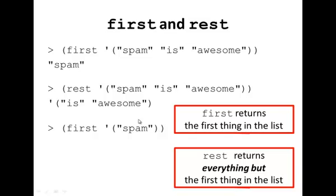Here's an example with just a single element list. It'll still just return spam, which is the first element in that list. And rest will return the empty list because it will return everything but the first thing. So everything but the first thing, which is spam, is just the empty list.